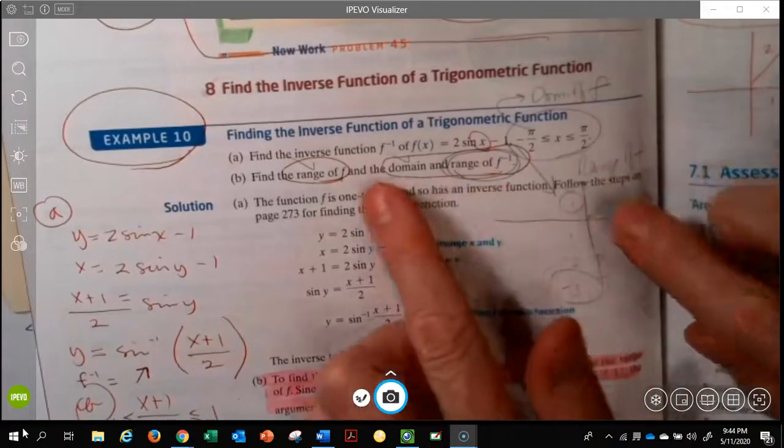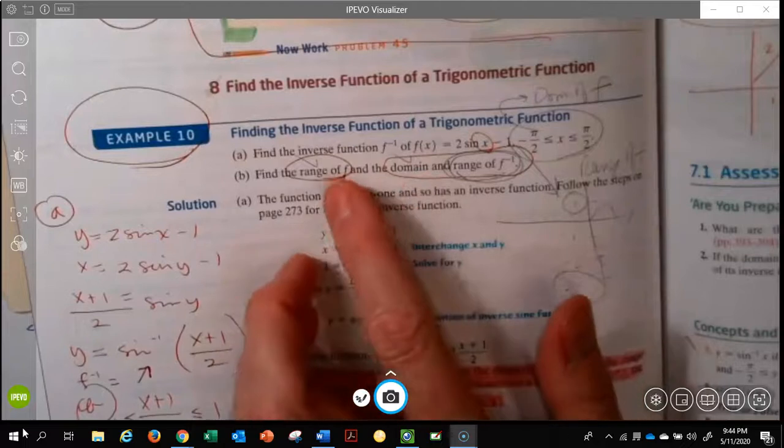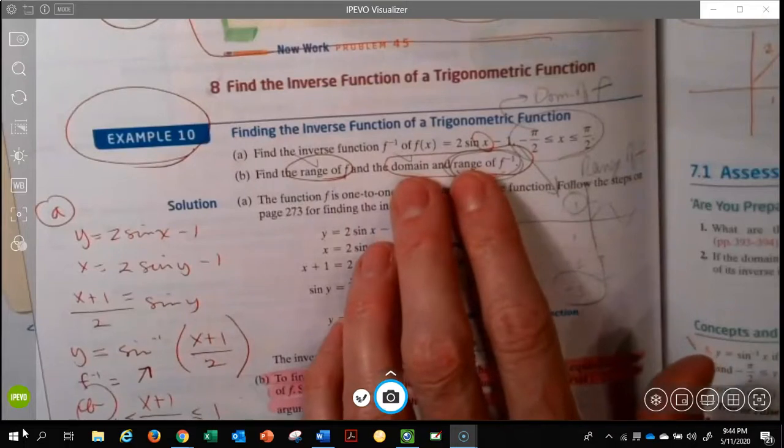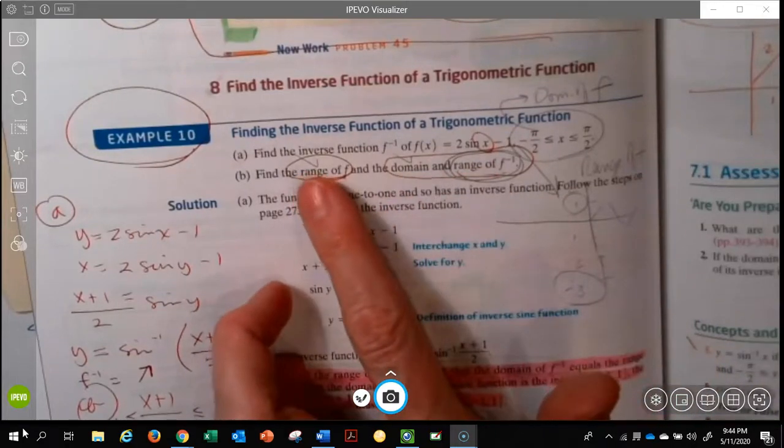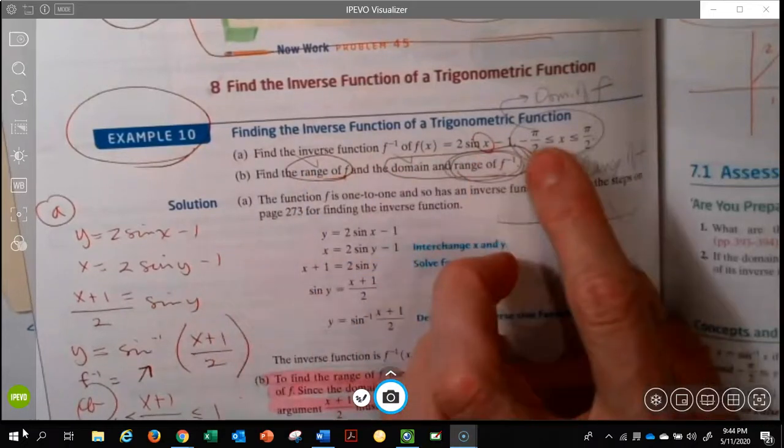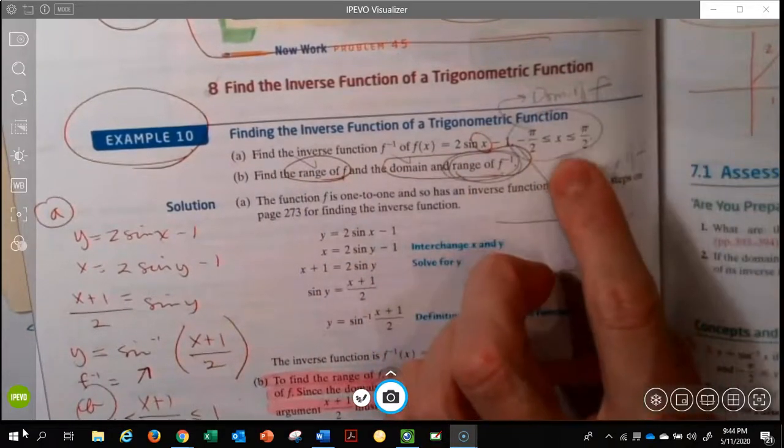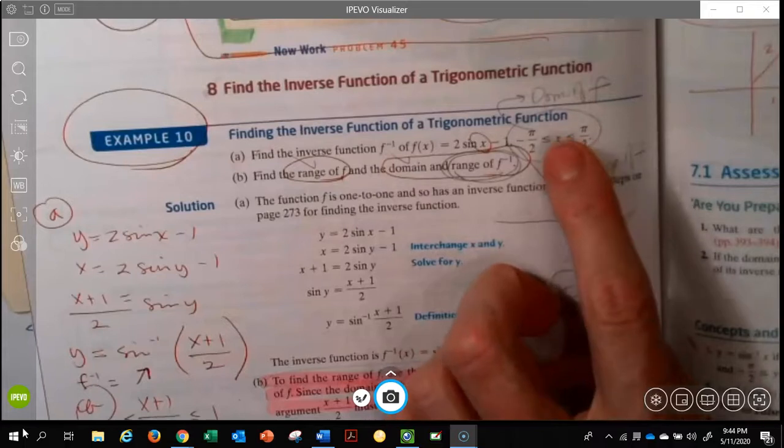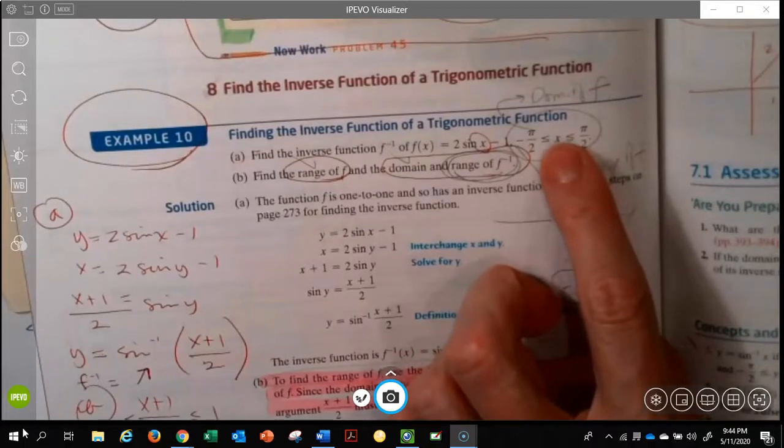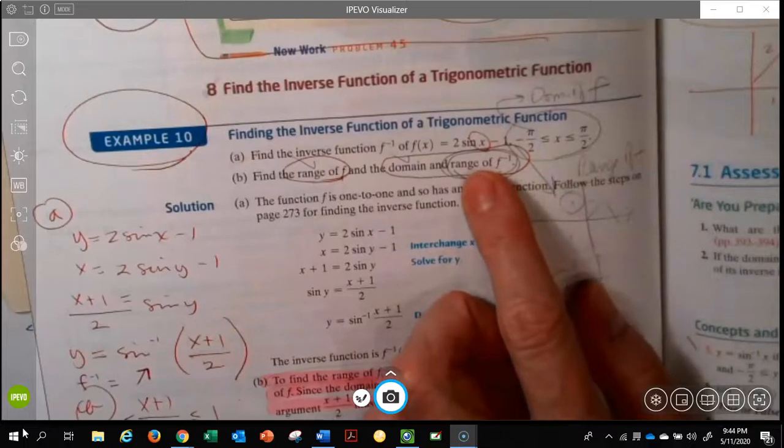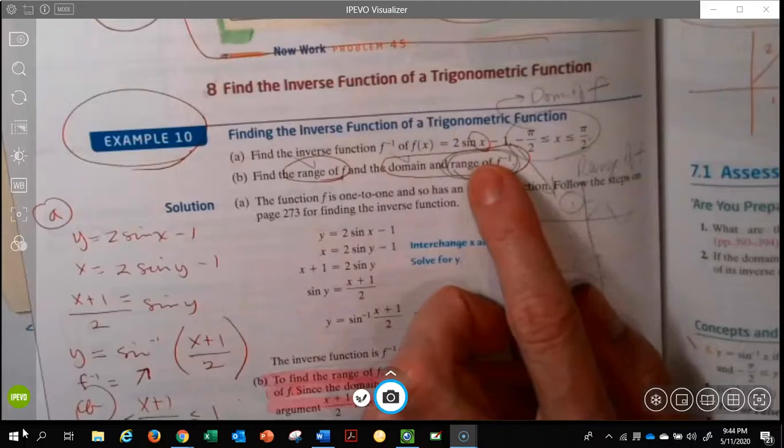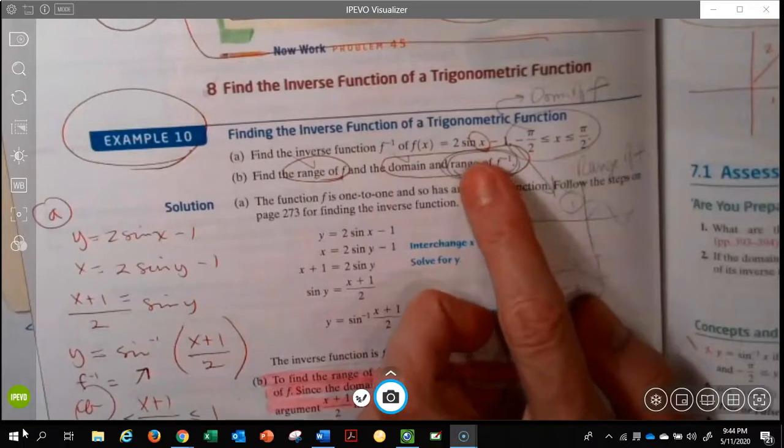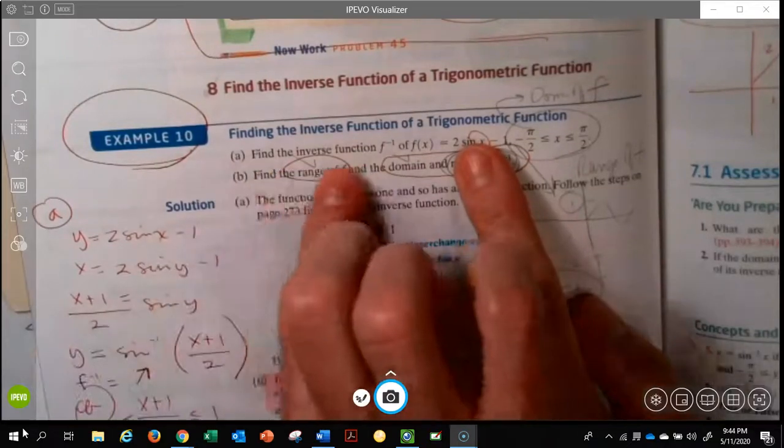So I'm going to start right here. They are asking for three things. They want the range of the original function, and they want the domain and the range of the one that we just created. They want the range of the original, and they gave us the domain of the original. So we have one of these four pieces done. But I want to go ahead and say that if we have the domain of the original function, we also have the range of the inverse. And so we have this last one done.